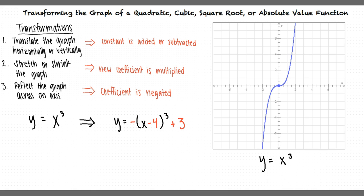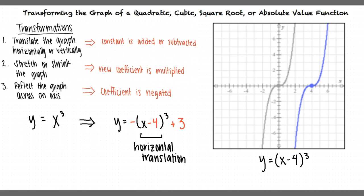Subtracting 4 from x inside the parentheses corresponds to a horizontal translation. Since we subtract 4, we translate the graph of y equals x cubed to the right 4 units to result in the graph y equals x minus 4 cubed.